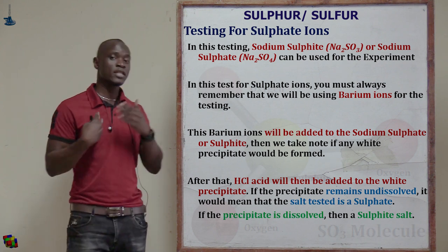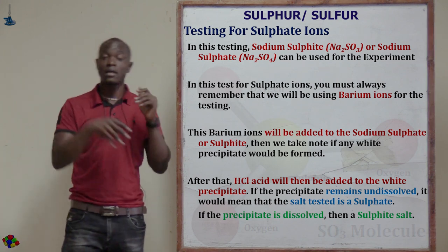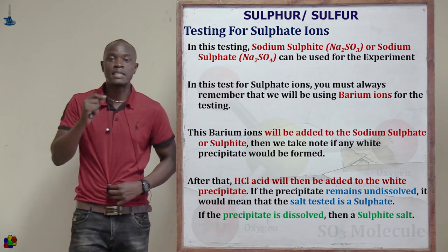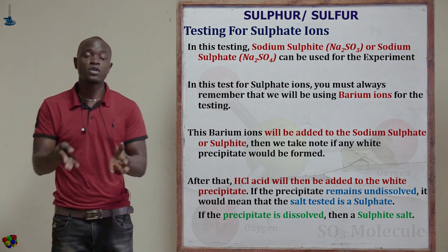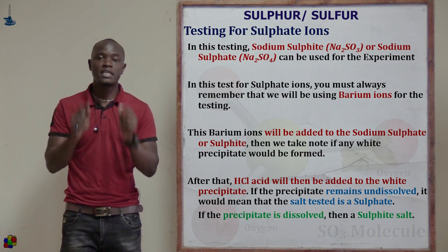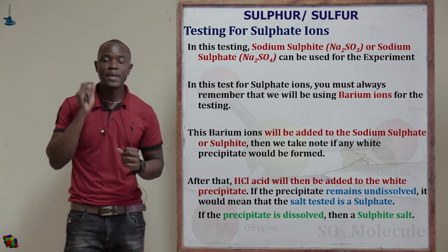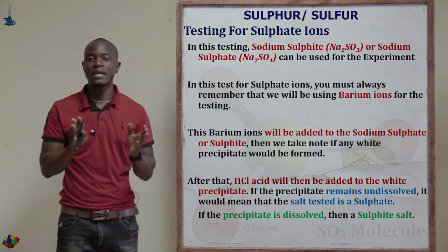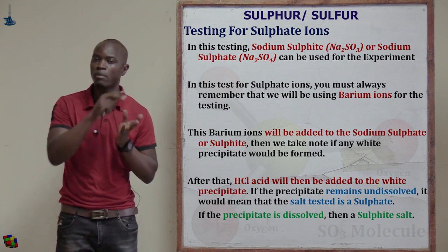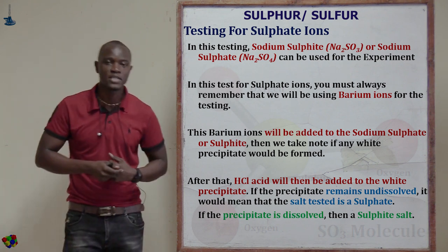These are not nitrate ions — we saw that nitrate ions form a brown acidic gas. This is sulfate. In the laboratory, if you see the word barium in a reagent, let it always register in your mind that there might be a test for sulfate ions, because barium ions are mostly used in the testing of sulfate ions.